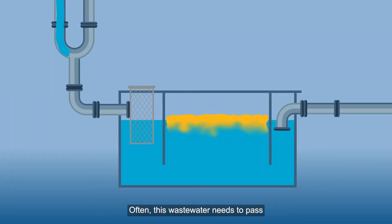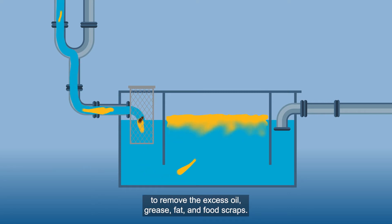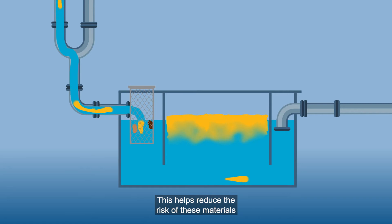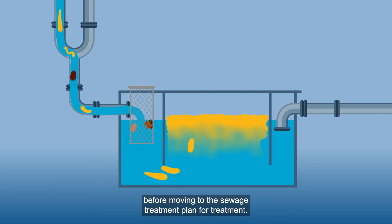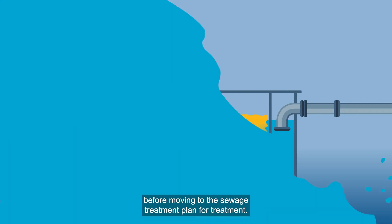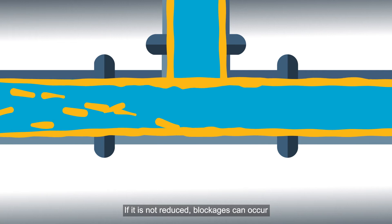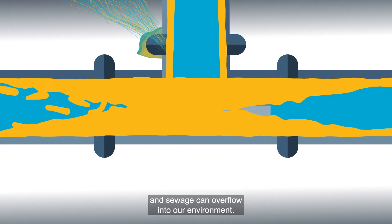Often, this wastewater needs to pass through a grease arrestor before it enters the sewer, to remove the excess oil, grease, fat and food scraps. This helps reduce the risk of these materials clogging up the pipes and pumps it passes through, before moving to the sewage treatment plant for treatment. If it is not reduced, blockages can occur and sewage can overflow into our environment.